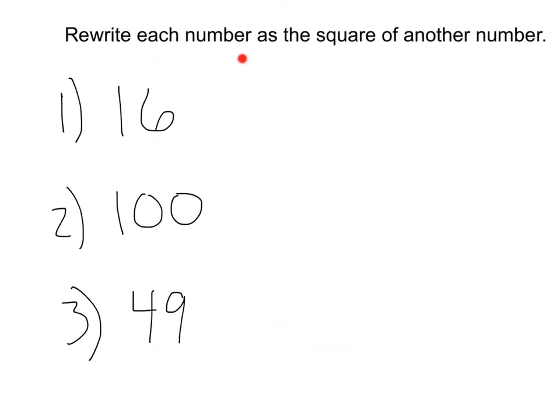For these ones, let's rewrite each number as the square of a different number. So for number 1, we have the value of 16. This time, instead of writing as a square root, I want to write as a square. I know 16 is the same as 4 squared, right? 4 squared, 4 times 4 is 16. Same value, rewritten as the square of a different number.